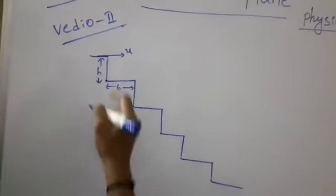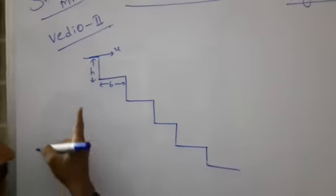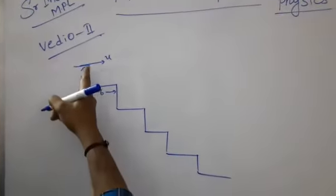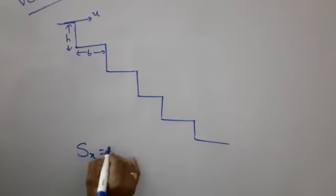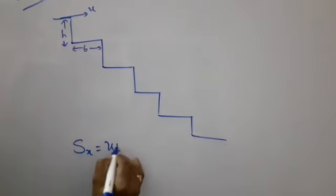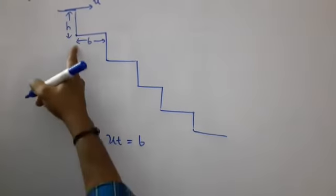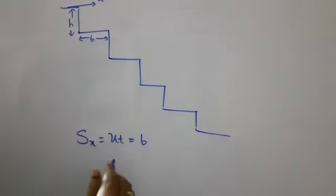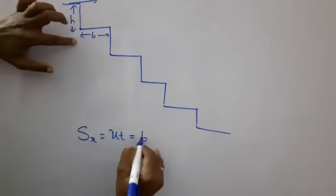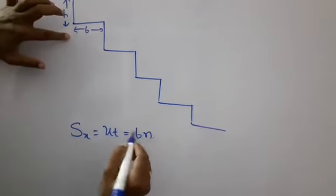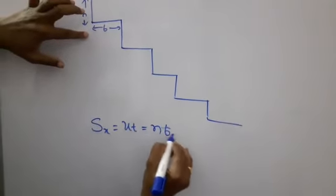Now, the horizontal displacement is equal to horizontal velocity into time, that is Sx = U into T, which equals B. Since N steps are there, therefore the horizontal displacement is N into B.